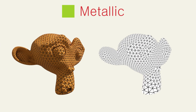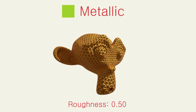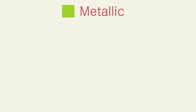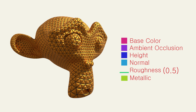The metallic map is also a black and white map, being black non-metallic (also known as dielectric) and white being metal. In general, materials in the real world are dielectric or metallic, so the value of the metallic map should be pure white or pure black. You do have the freedom as an artist to use a middle gray if you feel like it. For now, you should know that white means metallic and black means non-metallic. And this right here is how our final monkey looks like and with what values. For this case, I deactivated the height map as I thought it looked better only with the normal map.